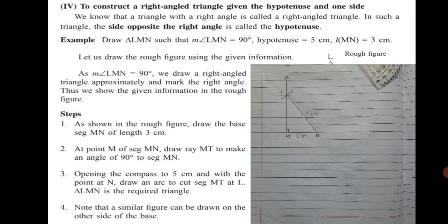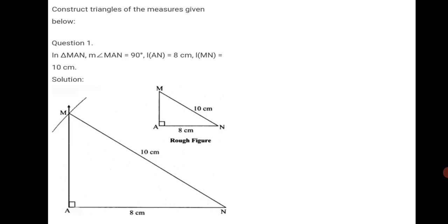This way we have constructed a right angle triangle as per the measures given. Let us now begin with Practice Set number 5. Construct triangles of the measures given below. Question 1: In triangle MAN, angle MAN is equal to 90 degrees. Draw a rough figure with the right angle named as angle MAN. The remaining sides are — length AN is 8 cm and length MN is 10 cm. Enter these measures in the rough figure, then start the construction.